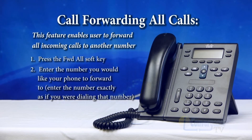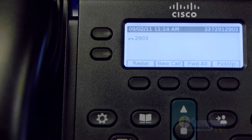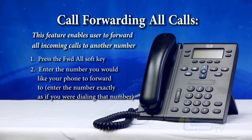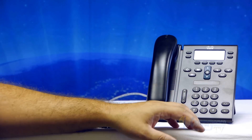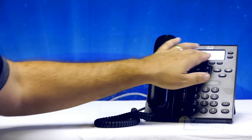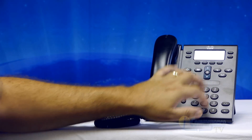There may be times when you need to forward any calls coming to your extension — maybe you're out at an important meeting but expecting a call. One of your soft keys is forward all. If you press that, it'll ask you to enter a number. You can forward calls internally to another extension of someone who will answer those calls for you while you're out. If you're forwarding to an internal extension, you just dial the four-digit extension and your phone will show it's forwarded to that extension.